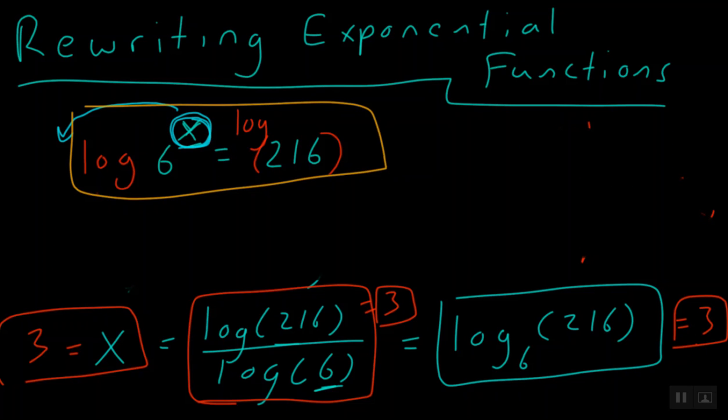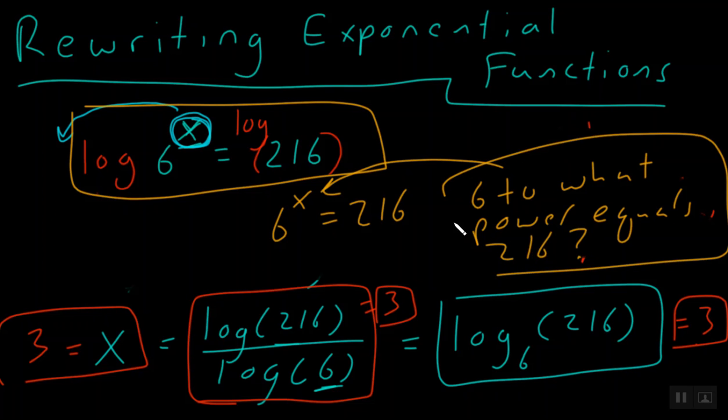I want to go back to our original problem, and I want to ask you, what is this really saying? Well, when we have 6 to the power of x is equal to 216, what we're really saying is 6 to what power equals 216? And we actually answered that. If you were to say 6 to the third power is equal to 216, you would be absolutely right. Let's move on to another example.